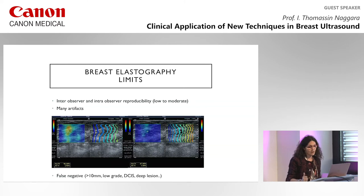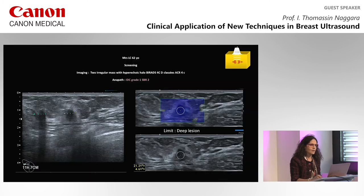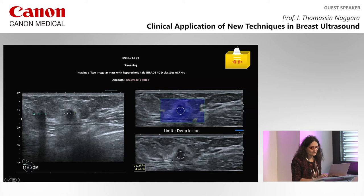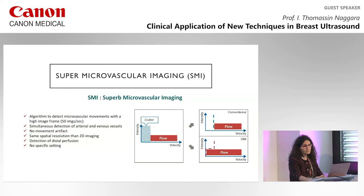Even with a ratio, there are false negatives — particularly low-grade lesions, DCIS, and deep lesions. In this example, the B-mode shows a hypoechoic lesion with halo, so B-mode classification is suspicious, but when you apply elastography the coefficient is quite low — probably because it is a very deep lesion. We know that deep lesions are a known source of false negatives in elastography.